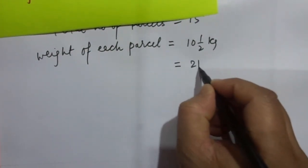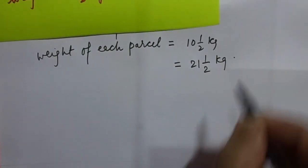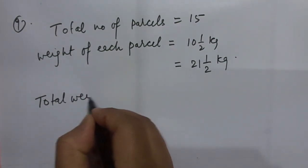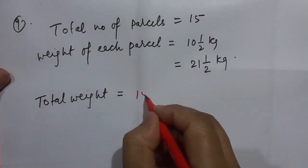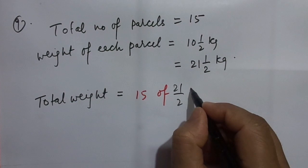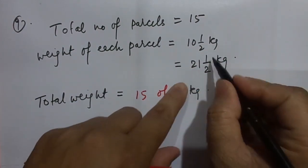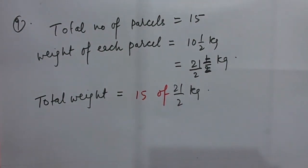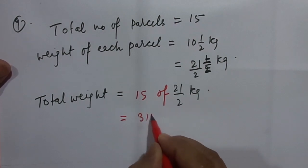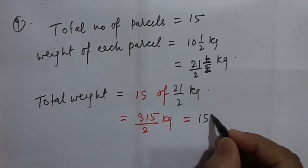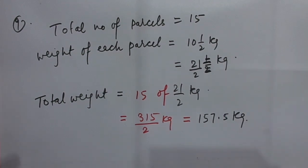Weight of each parcel is equal to ten and a half kg, which is equal to twenty-one by two kg. The total weight — they are asking — find the total weight, which is equal to fifteen times of twenty-one by two kg. It will not get cancelled, so we should multiply it. After multiplication, we will get three hundred and fifteen by two kg. When you divide it, you will get one hundred and fifty-seven point five kg. My goodness, the parcel was very heavy!